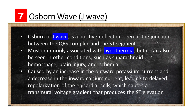The Osborne Wave, also known as the J-Wave, is a positive deflection seen at the junction between the QRS complex and the ST segment. It is most commonly associated with hypothermia, but it can also be seen in other conditions such as subarachnoid hemorrhage, brain injury, and ischemia.